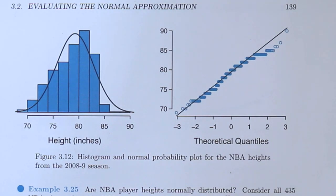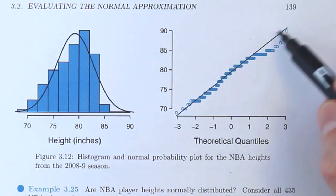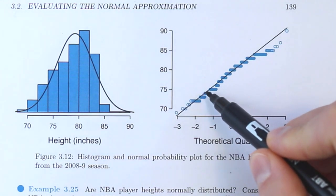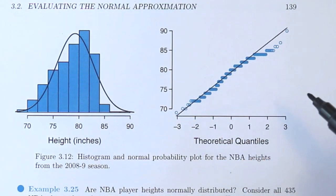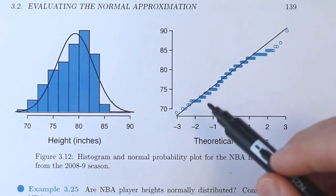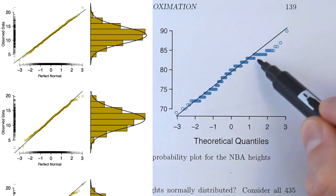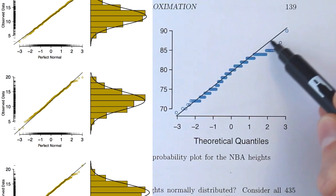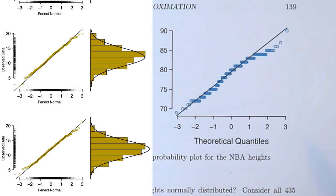Now let's look at a couple of actual data sets. The first is all 435 NBA players from the 2008–2009 season, so expected deviations should be similar to what we saw in the 400-observation examples. Looking at the normal probability plot, we see stronger deviations from the line than before. The y-values are discretized because heights are reported in whole inches — 70, 71, 72 inches — with no values in between. The strongest deviations are at the upper end, which we didn't see in the simulated 400-observation data sets. This suggests the NBA height data is not normally distributed.